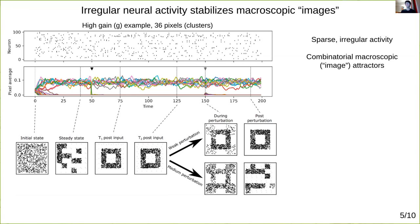Thus, we have a network where sparse irregular neural activity co-emerges with a combinatorial number of macroscopic or quote-unquote image attractors.